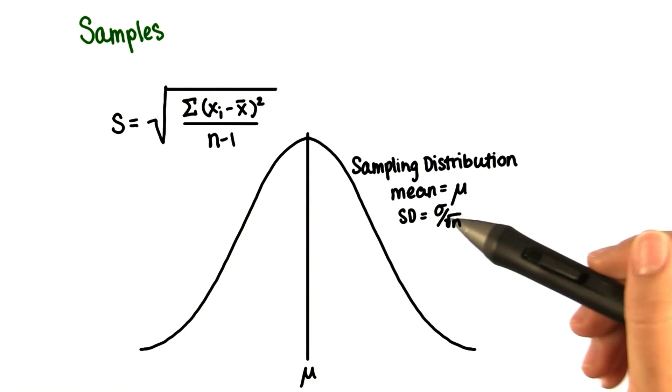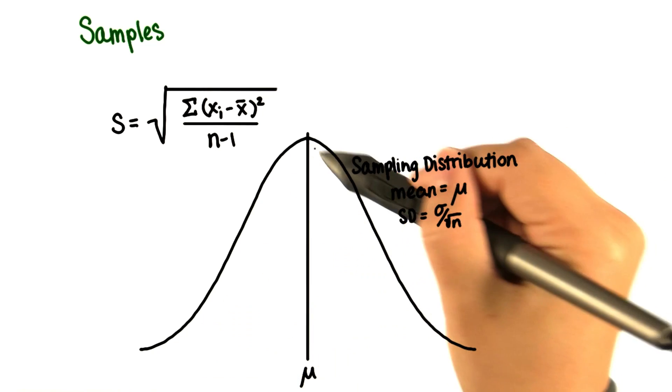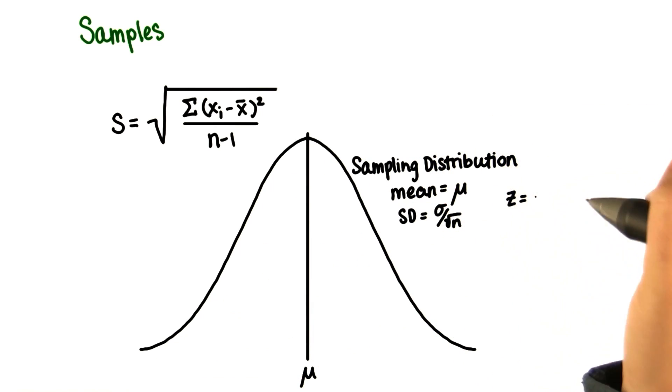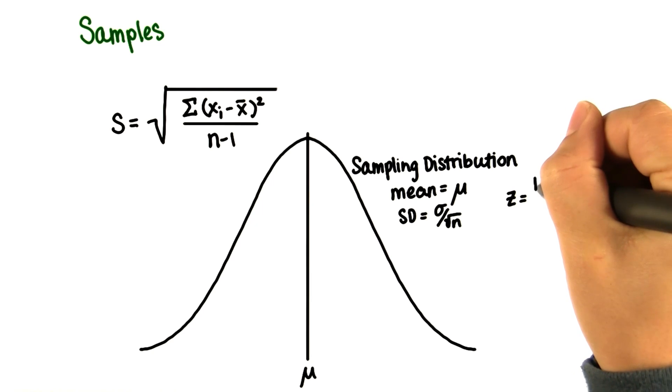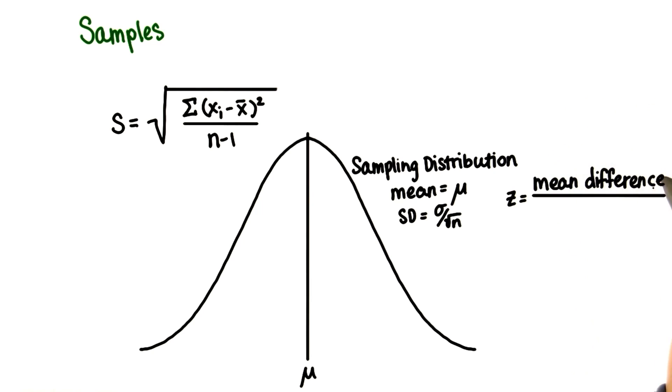Remember that for any sample mean, we can find where it falls on this distribution by standardizing. In other words, finding the z-score of the sample mean. We find the difference between the sample mean and mu, and then divide by the standard error. But now, the standard error depends on the sample. We can no longer use sigma if we have a sample.